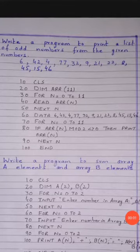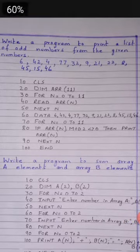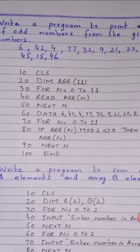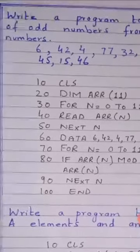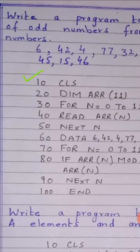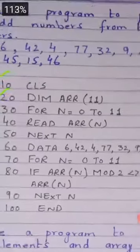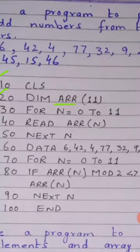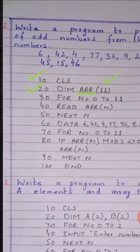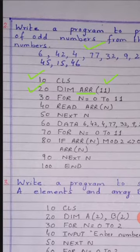اب دوسرا program ہے: write a program to print a list of odd numbers from the given numbers۔ یہ numbers کی ایک list ہے اور اس میں سے arrays کو use کرتے ہوئے ایک ایسا program لکھنا ہے جس میں odd numbers screen پر display ہو جائیں۔ Line number 10: CLS۔ Line number 20: dim statement use کر رہے ہیں، array name ہے arrr اور size ہے 11، یعنی 0 سے 11 تک 12 values۔